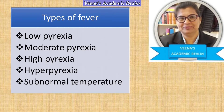Hyperpyrexia is when the body temperature goes above 105 degrees Fahrenheit — it is considered a medical emergency. Subnormal temperature is when the body temperature falls below normal, between 95 to 98 degrees Fahrenheit, or between 35 to 36.7 degrees Celsius. This condition is called subnormal body temperature.